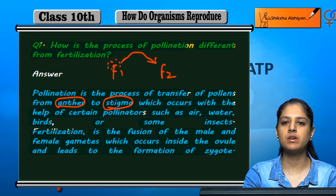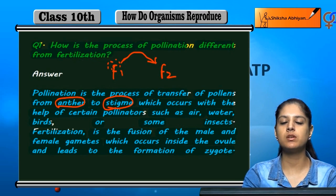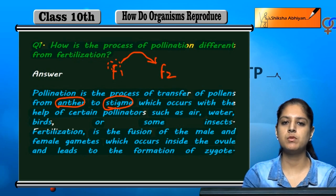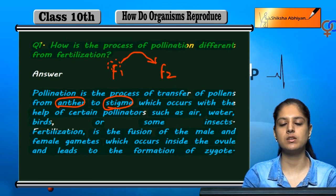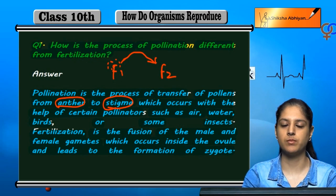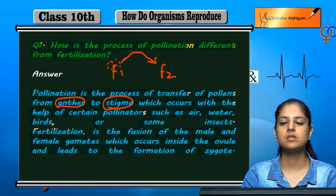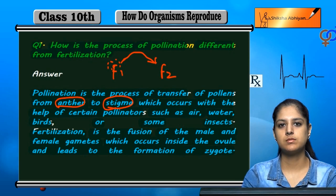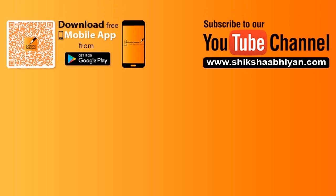So pollination is the transfer of pollen grains, but in fertilization it is the fusion of two gametes. This is the difference between pollination and fertilization.